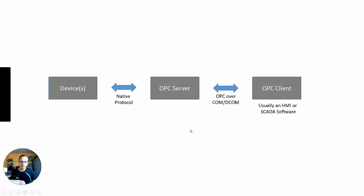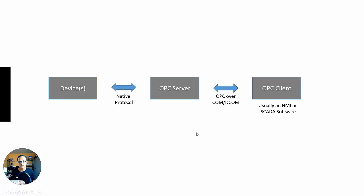This is the overall structure of classic OPC. There's some device or equipment. There's an OPC server talking some sort of native protocol, or it could be an open protocol, to the device or devices. Then we have the OPC client, which is usually HMI or SCADA software — nine times out of ten, that's what it was. And then there's OPC over COM or DCOM, which is a Windows technology, and of course the client and server would both run on a Windows platform.